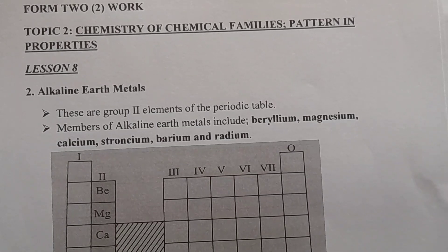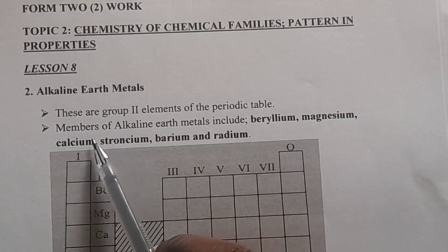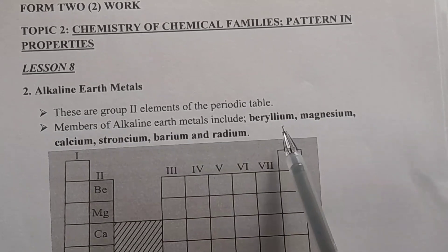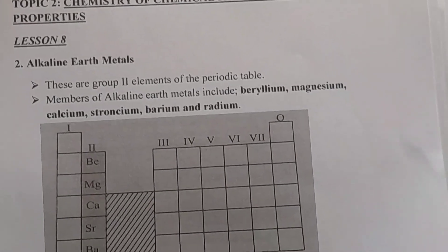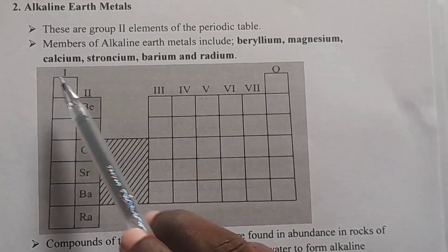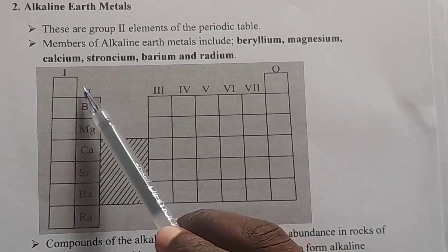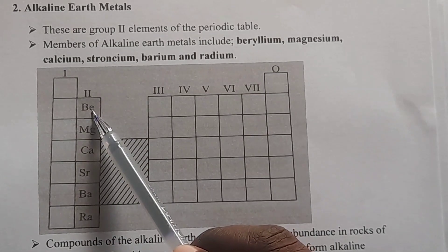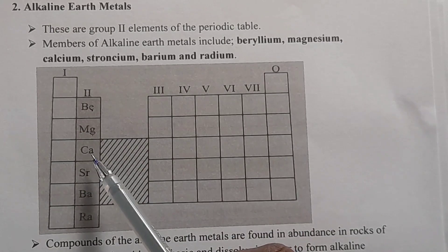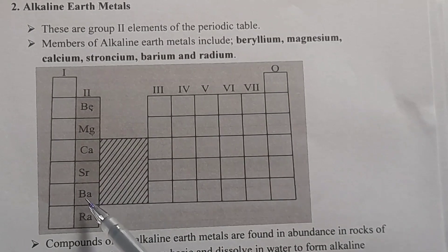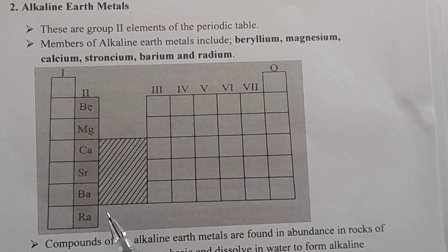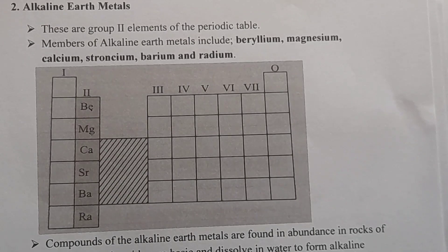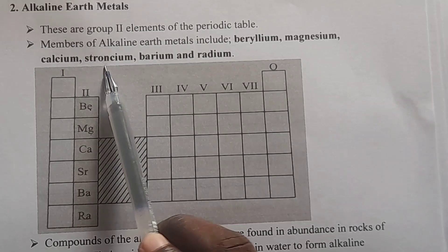We have seen the members of alkali metals. What about the members of alkaline earth metals? Members of alkaline earth metals include beryllium (Be), magnesium (Mg), calcium (Ca), strontium (Sr), barium (Ba), and also radium (Ra). Here we have a grid of the periodic table showing group 1 and group 2. We are dealing with group 2 elements, so we want only that portion. Remember, during the exam you may be asked about the three other members beyond beryllium, magnesium, and calcium — so remember strontium, barium, and radium.